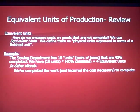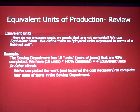The sewing department has 10 units — pairs of jeans in the Levi's factory — that are 40% complete. We multiply 10 units times 40% complete to come up with four equivalent units. In other words, we've completed the work and incurred the cost necessary to complete four pairs of jeans in the sewing department. Think about how much work is done and how much cost has been incurred.